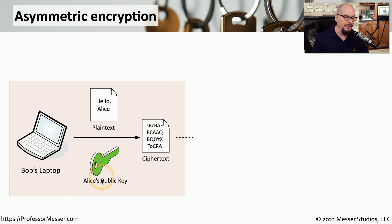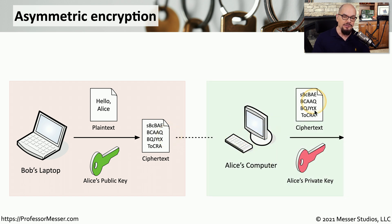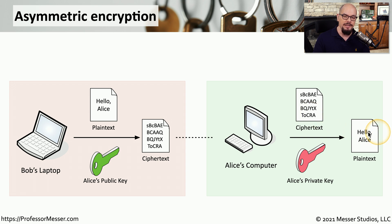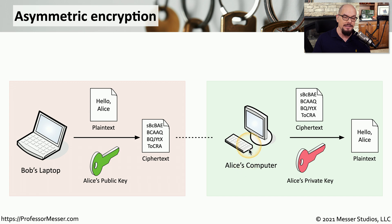You cannot use the public key to undo the encryption process you've already done. This means Alice will receive the ciphertext message and will apply her private key to decrypt it, and once decrypted she'll be able to see the plain text that says 'Hello, Alice.' This is the process that occurs every time someone wants to send information using asymmetric encryption. If we wanted to reverse this process and have Alice send encrypted information to Bob, she would need Bob's public key, encrypt the data, send the ciphertext to Bob, and Bob would use his private key to decrypt it.